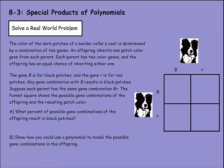Now let's solve a real-world problem. The color of dark patches on a border collie's coat is determined by two genes, B and R. An offspring inherits one patch-colored gene from each parent, and each parent has two colored genes with the offspring having an equal chance of inheriting either one. Gene B is for black patches and gene R is for red patches; any combination with a capital B results in black patches. Suppose each parent has the same combination, B and R — the Punnett square shows the possible gene combinations.